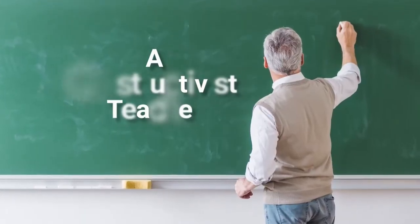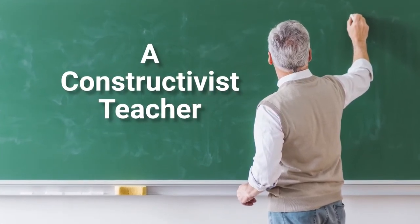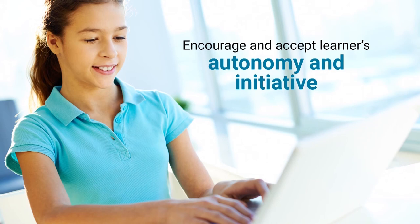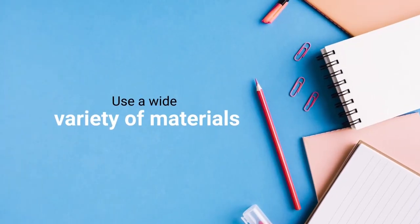In cognitive apprenticeship, the role of both learner and teacher is very important. If you are a constructivist teacher and wish to use scaffolding and cognitive apprenticeship in your class, what is expected from you? The first thing is that you should encourage and accept your learner's autonomy and initiatives. If a learner comes to you with a new idea or initiation, encourage it, ask them to think more, and if they bring out-of-the-box thinking, encourage it. Because learners in your class are varied, you cannot assume the same learning support will work for all, so use a wide variety of material.